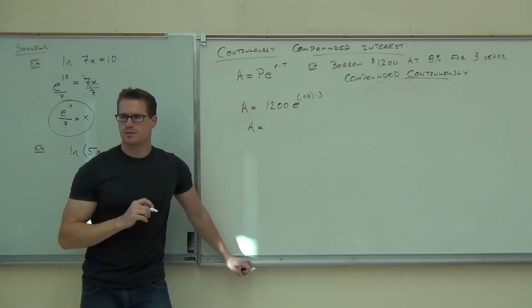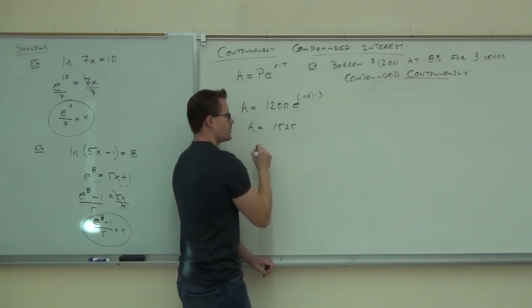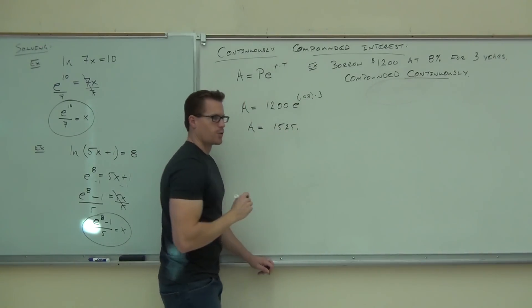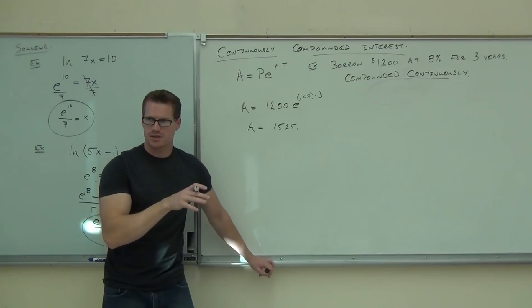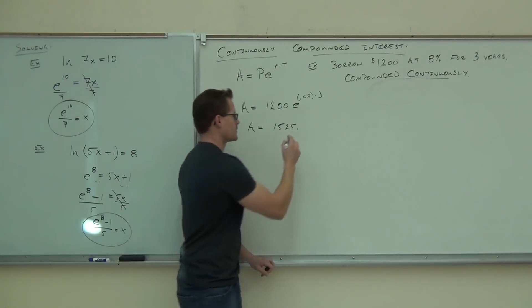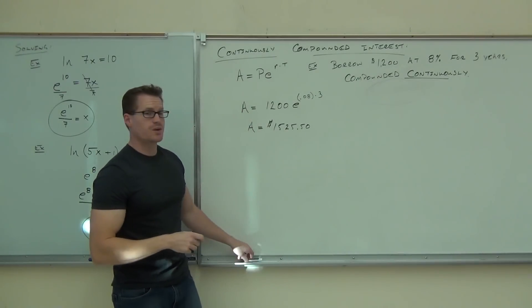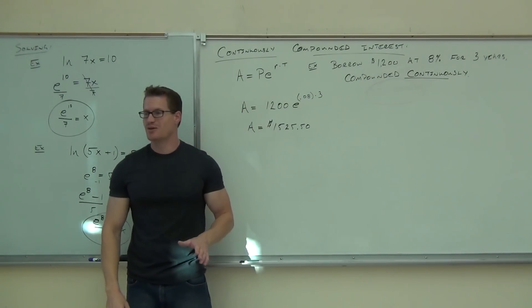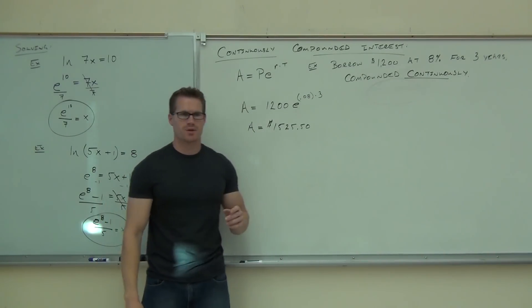You should get approximately $1,525.49 or $1,525.50. So if you borrow $1,200 at 8% for three years, in three years you give back $1,525.50. No payments until then. That's continuously compounded interest. If I asked you daily, weekly, monthly, or annually, you'd use the other formula — slightly less interest. Continuously compounded gives you the maximum interest you can accrue. It's hardly different from daily compounding.